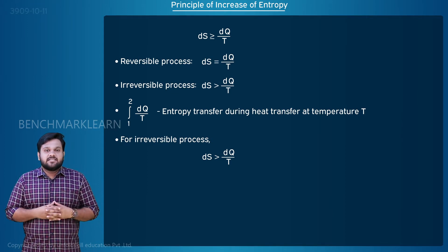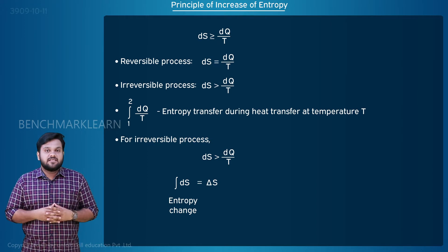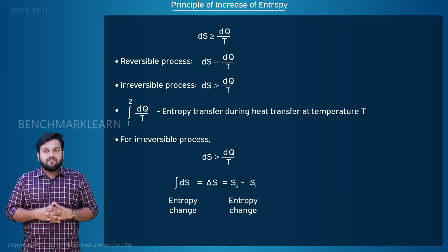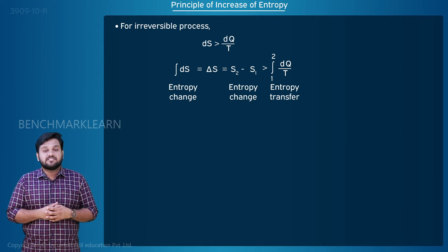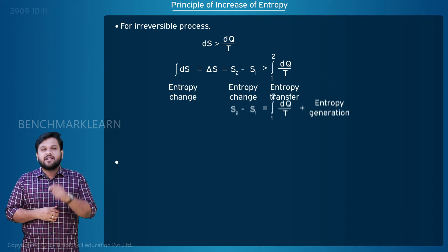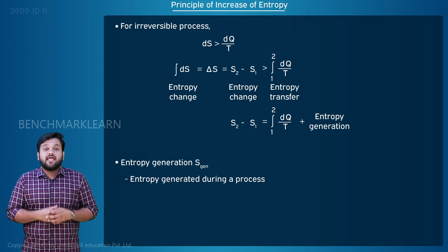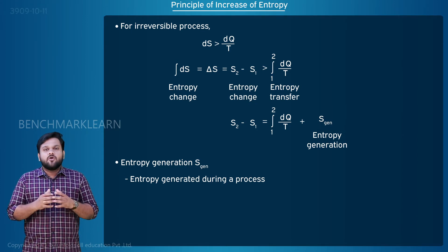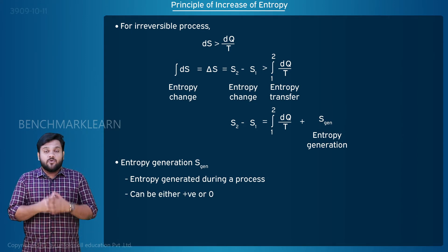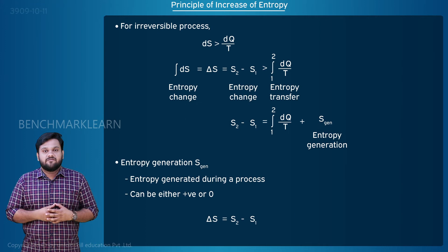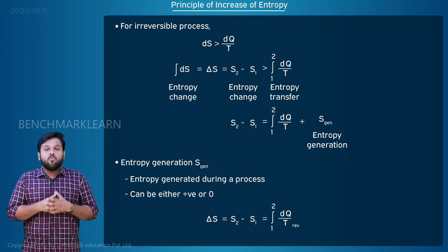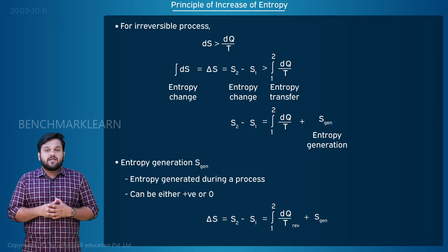The entropy change, integral of ds equal to delta S equal to S2 minus S1, exceeds the entropy transfer — that is, the integral from 1 to 2 of dq by T — by some positive quantity for an irreversible process. This excess entropy generated during a process is called entropy generation, denoted by S_generation. Delta S equals S2 minus S1, which equals the integral from 1 to 2 of dq by T reversible, plus S_generation.